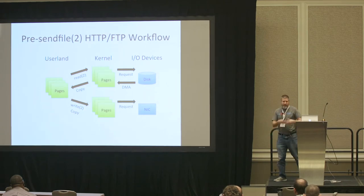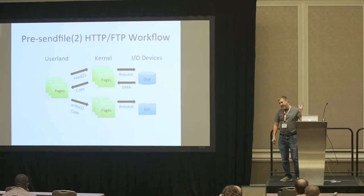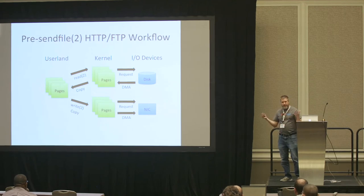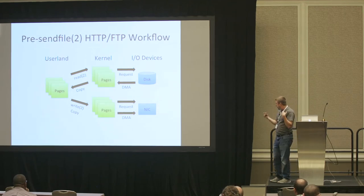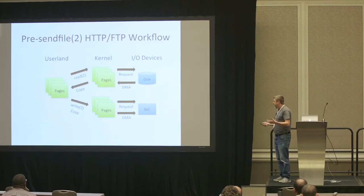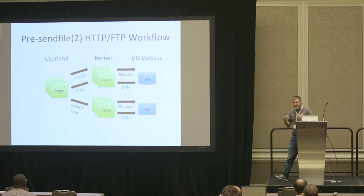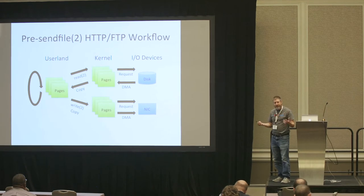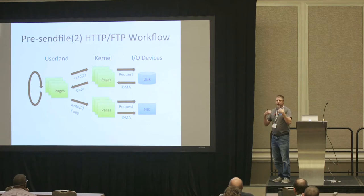Once we have our mbufs ready, we send requests to the NIC to schedule transmission. When the NIC processes the transmission, it does DMA and reads the pages out. So we've stored three copies of the data at best, and copied it around several times, bouncing in and out of the kernel. And if the file is large, we have to loop this over and over again, invoking several rounds of system calls with lots of bouncing between kernel and userland.